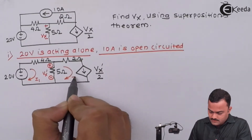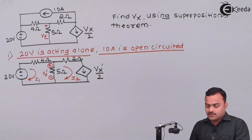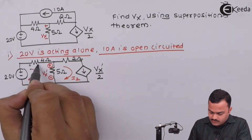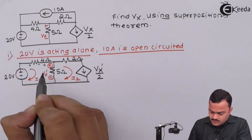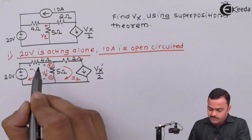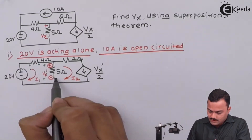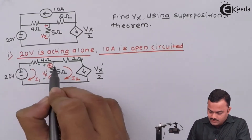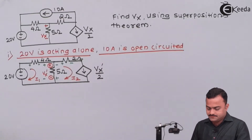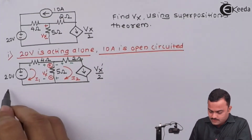We have I1 and I2. Depending upon the current direction we will get the voltages across all the resistors. Despite the polarity given, we will still mark our own polarity because this is caused by I1. For I2 we will get voltage polarities accordingly. Now we are ready to apply Kirchhoff's Voltage Law to mesh number 1.